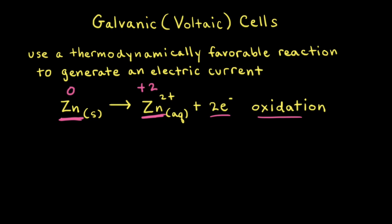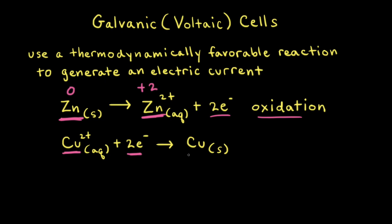Therefore, zinc metal is oxidized. Here is the other half reaction we're going to see in our galvanic cell diagram. In this half reaction, the copper two plus cation gains two electrons to turn into solid copper. Gain of electrons is reduction. Therefore, this is the reduction half reaction.